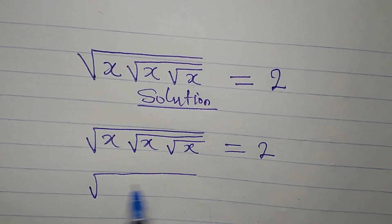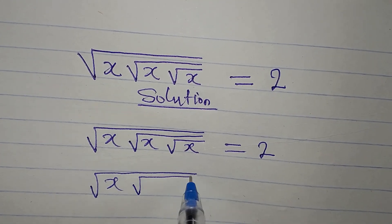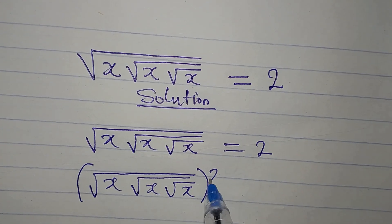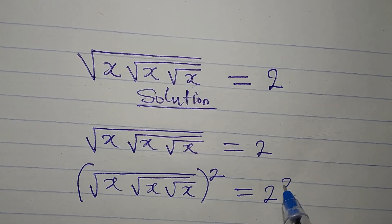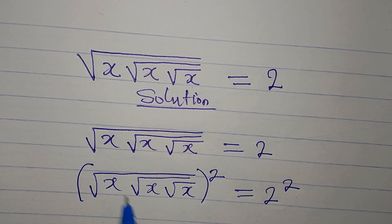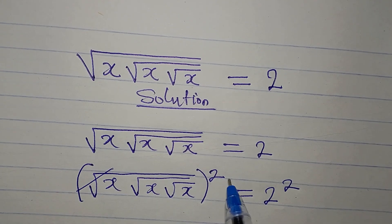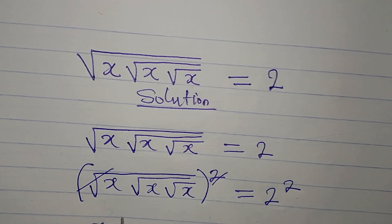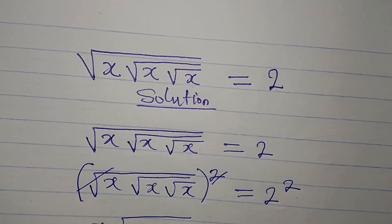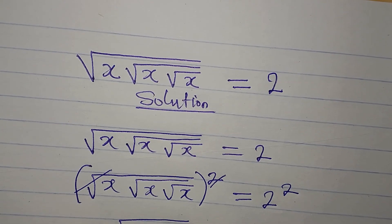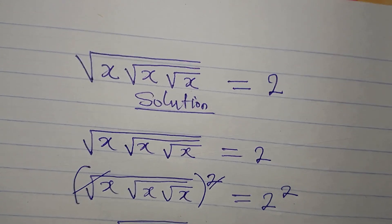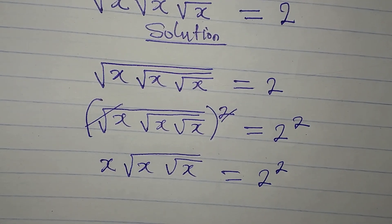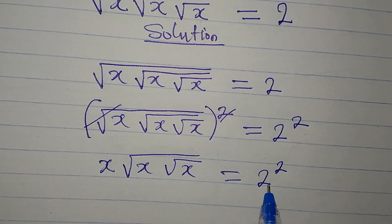For the first method, we take square root of x · square root of x · square root of x and square the whole expression. On the other side we have 2 squared. The square eliminates the outer square root, leaving us with x · √x · √x = 2 squared. Let's keep it in exponential form.